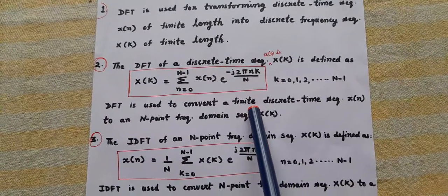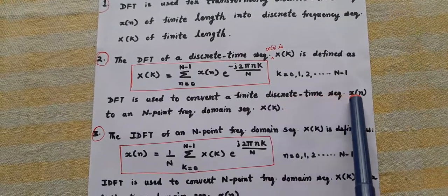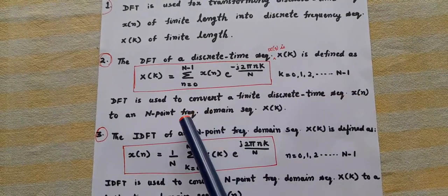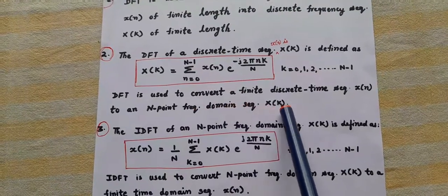What is DFT? DFT is used to convert a finite discrete time sequence x(n) to an N-point frequency domain sequence x(k).